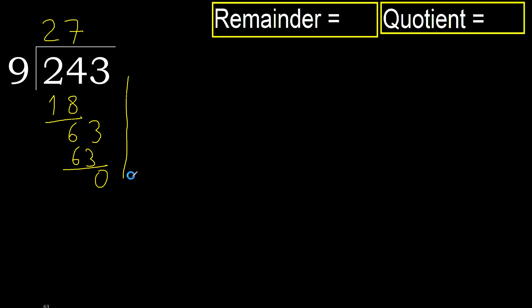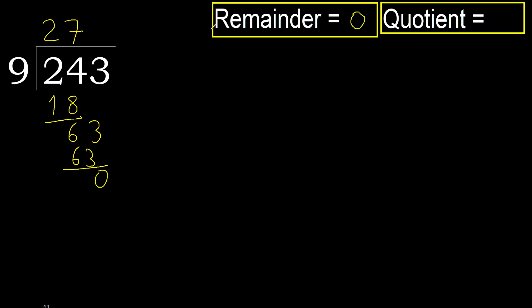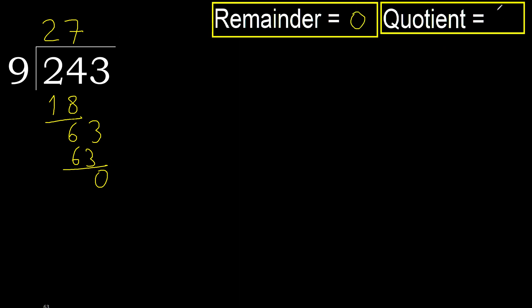There is not another digit, therefore finish. 243 divided by 9 equals 27.